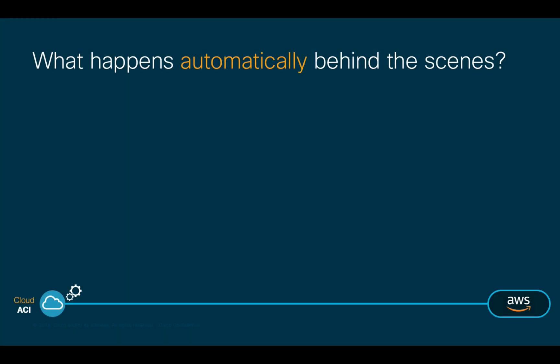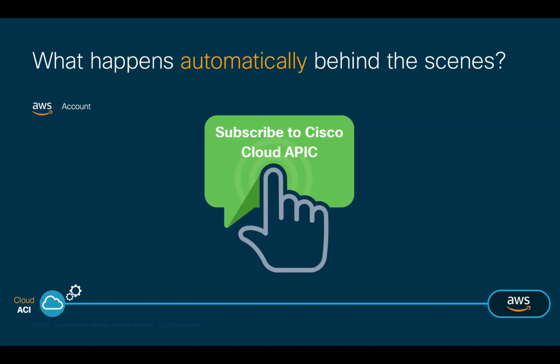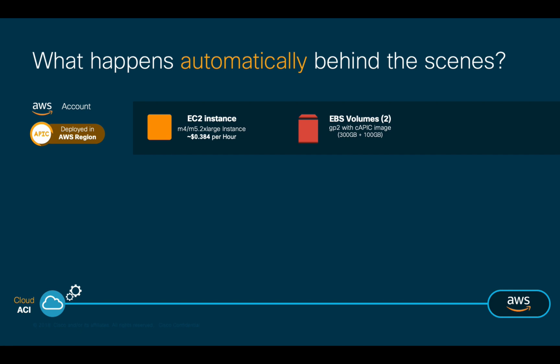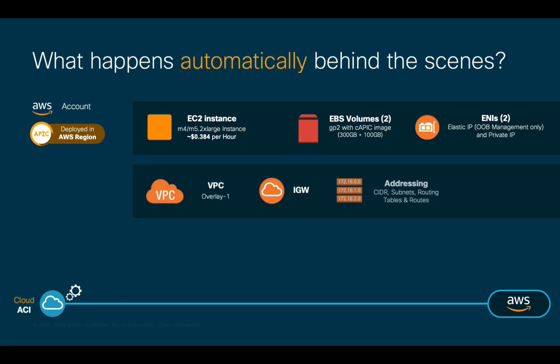There are a few things happening behind the scenes that made this so simple. In the case of AWS, when I clicked to subscribe to the Cisco Cloud APIC service and selected a region, an EC2 instance was automatically deployed, which had a couple of EBS drives automatically curated and attached to it, and a couple of network adapters as well, with their corresponding private and public IP addresses for internal and out-of-band management connectivity. All the networking constructs Cloud APIC would need to communicate were also automatically curated, including the VPC, Internet Gateway, CIDR blocks, subnets, routing tables, and security groups, along with the corresponding rules to provide secure access.